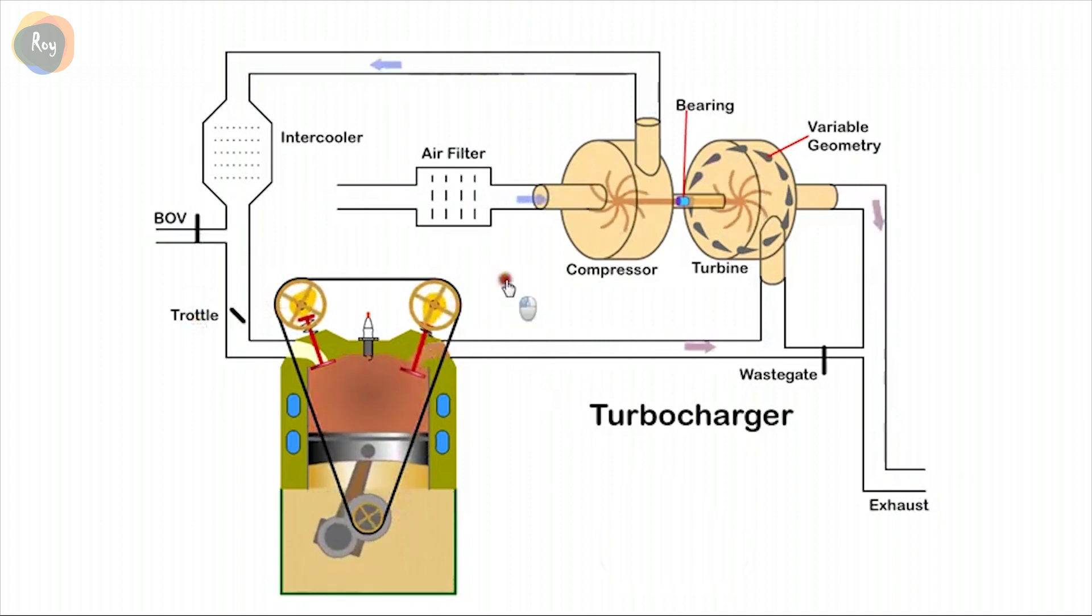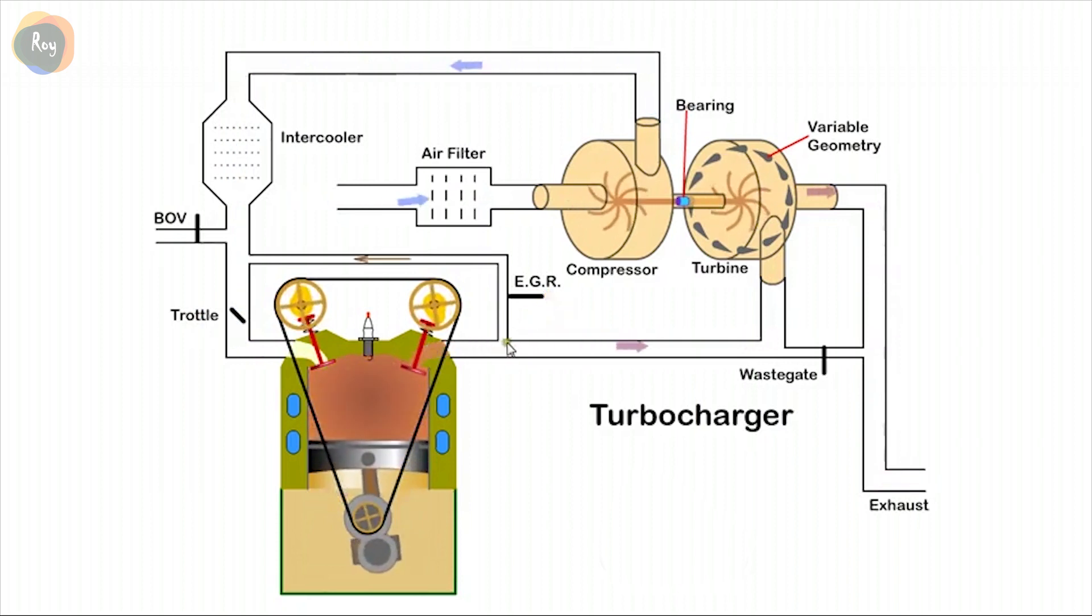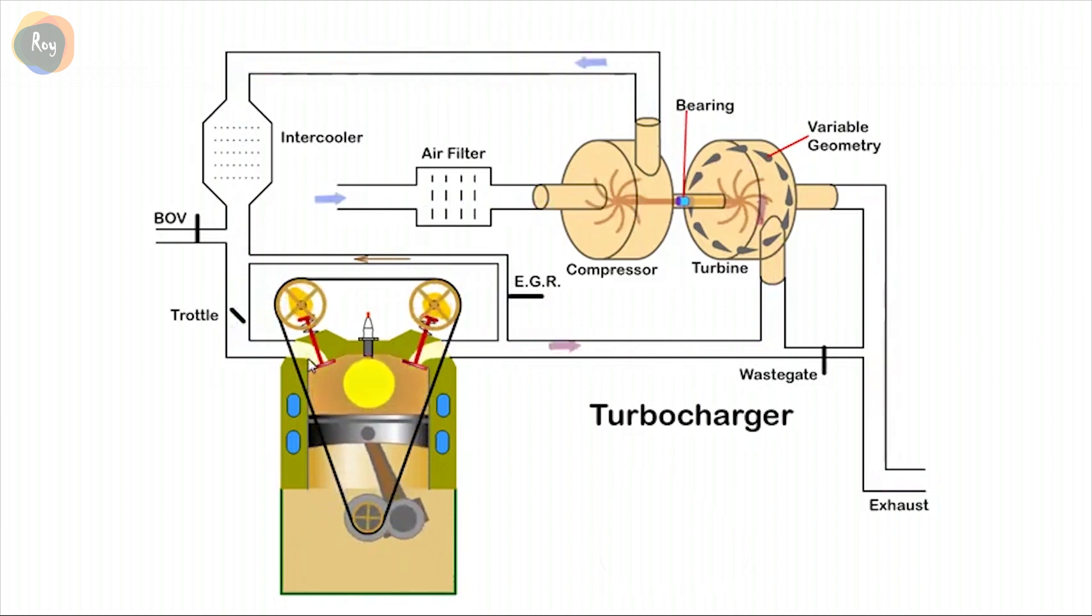Exhaust gas recirculation recirculates a small amount of exhaust gas back to the inlet under certain operating conditions. This reduces the amount of oxygen in the charge and helps to reduce combustion temperatures and emissions.